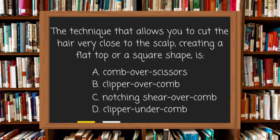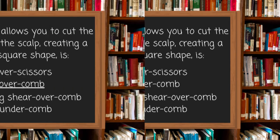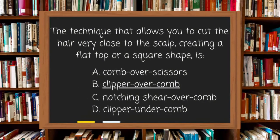The technique that allows you to cut the hair very close to the scalp, creating a flat top or square shape is: A. Comb over scissors, B. Clipper over comb, C. Notching shear over comb, or D. Clipper under comb. The answer is B, clipper over comb.